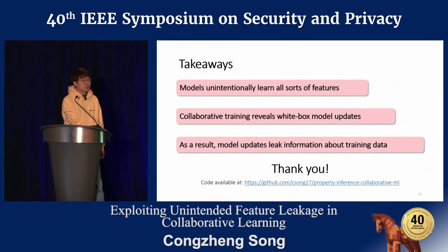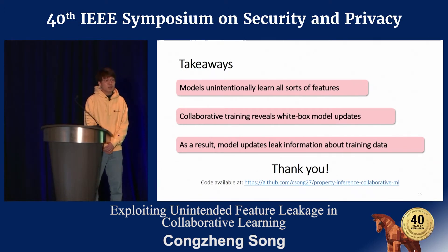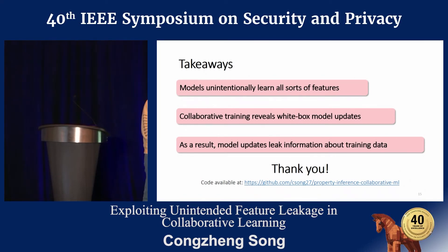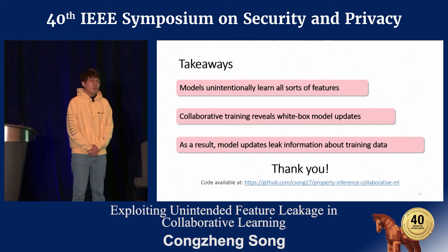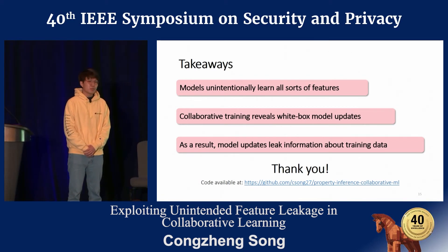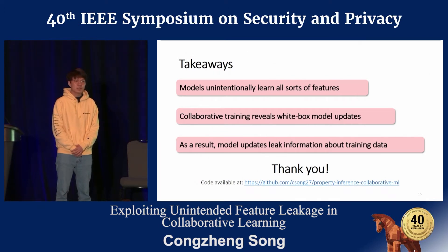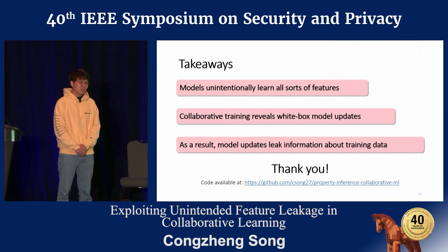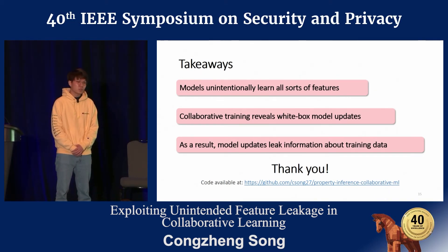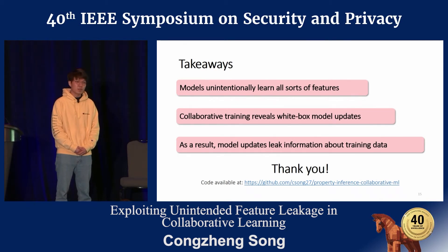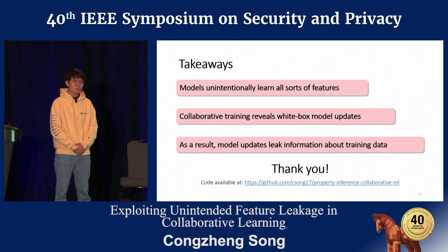Question from Roxana Jambashi from Columbia: there is work on differentially private collaborative training — do your attacks apply to that? The presenter responded: we mentioned that work as one of our countermeasures. Their approach essentially requires millions of participants to ensure the model converges, whereas in our case the number of participants is much smaller, so their method doesn't converge and the model doesn't perform well on its main task.